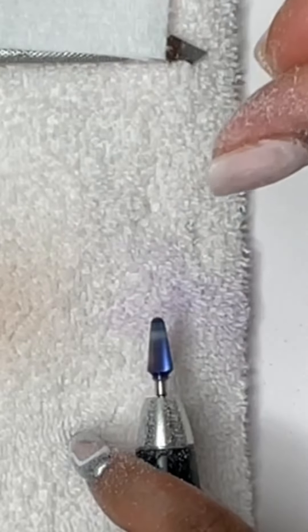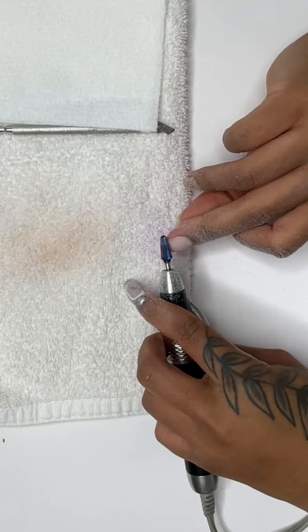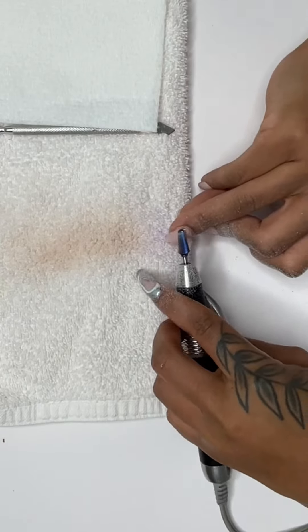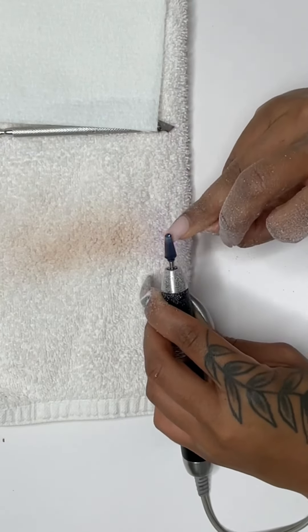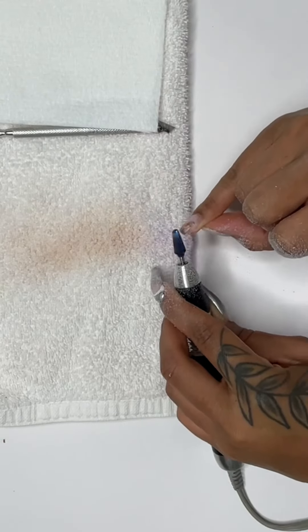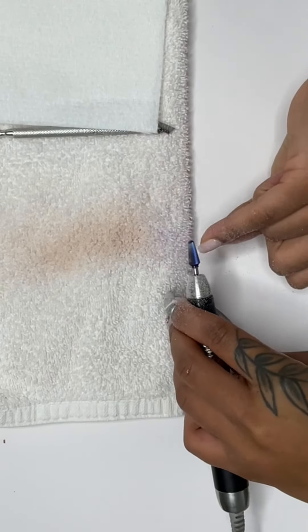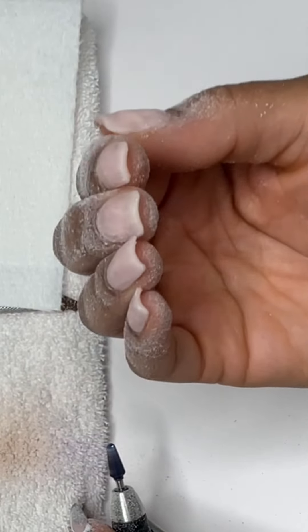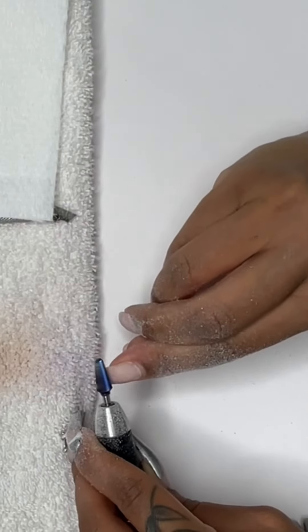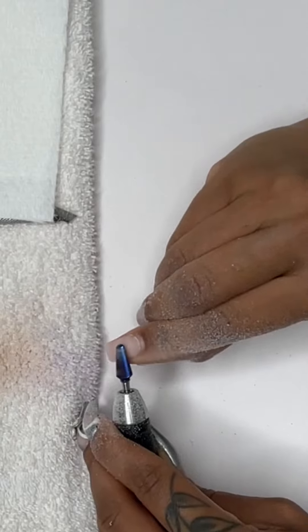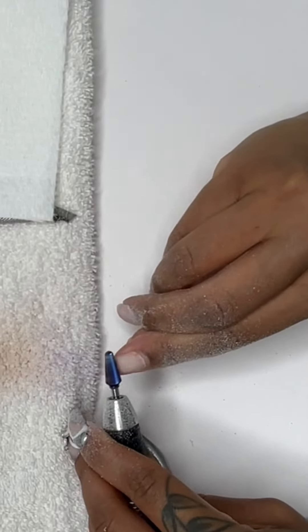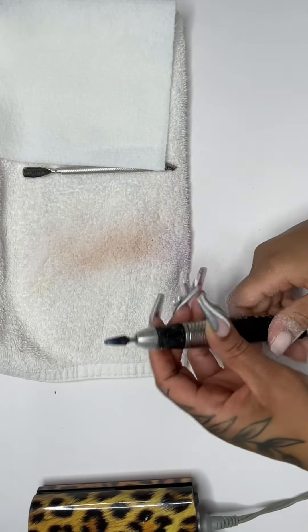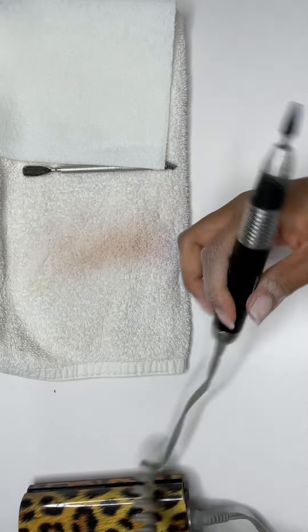I did have a little bit of lifting right there so I just want to make sure that I get that completely off. This is how thin I get them, but that pointer finger I am going to take down just a little bit more since that one was on the thicker side. I don't want to have that one soaking for a lifetime, so let me just take that one down a little bit more. There we go, and now they are ready to go in a soak bowl.